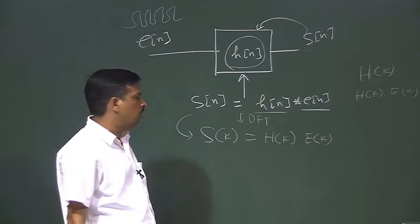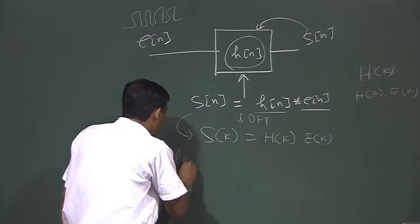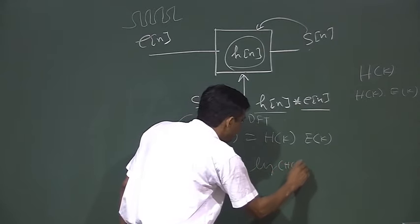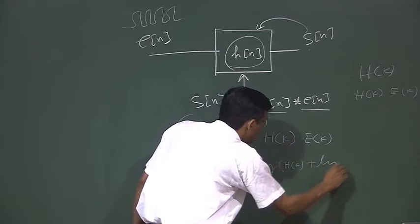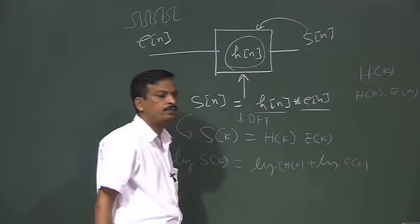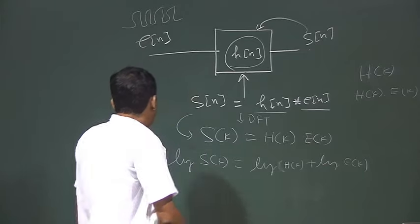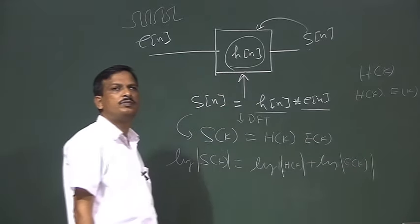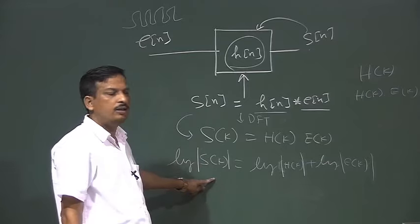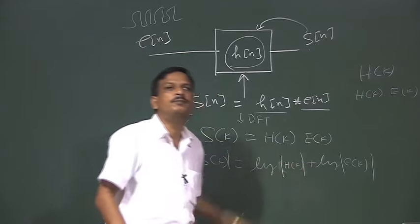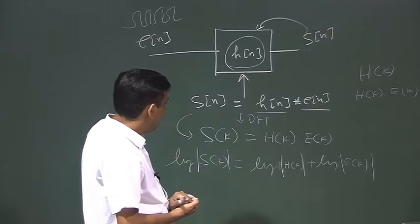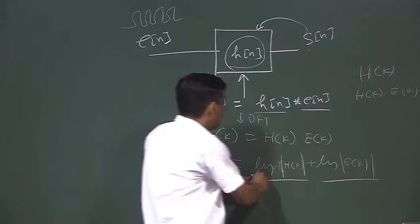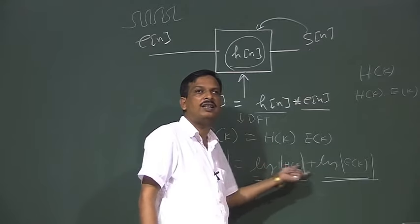If I say the excitation source is nothing but an impulse, then I want a signal processing methodology by which I can separate H(k) from the product H(k)·E(k). What can I do? If it is a product, and I take the log of S(k), it is nothing but log of H(k) plus log of E(k). I can take the absolute log or just the simple log. In the log domain, the product becomes additive. So if it is additive, can I separate H(k) from E(k)?